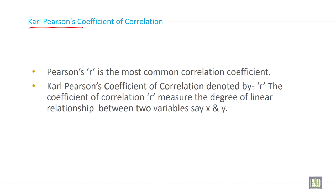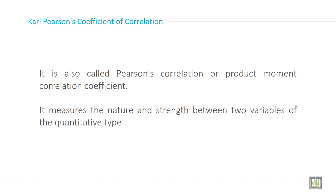Pearson's r is the most common correlation coefficient. Carl Pearson coefficient of correlation is denoted by r. The symbol of correlation is r. The coefficient of correlation r measures the degree of linear relationship between two variables, say x and y, or you can say dependent variable and independent variable.